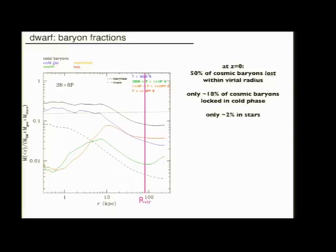The baryon fraction profiles look very different from the Milky Way model, the more massive model at high redshift. You see that the baryon fraction is actually decreased by about 50%, so radiation pressure was able to blow out half of the baryons within the virial radius and it's able to keep the rest mostly hot. The cold baryon fraction is reduced to about 18 percent of cosmic baryons, and only two percent of those are in stars.